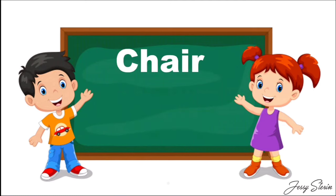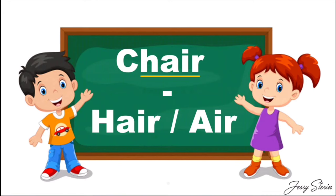Next is 'chair', C-H-A-I-R. The hidden word over here — you can write 'hair' also, and you can write 'air' also. So we're going to write 'hair' or 'air'. In some words you will find even two words or more than two words.